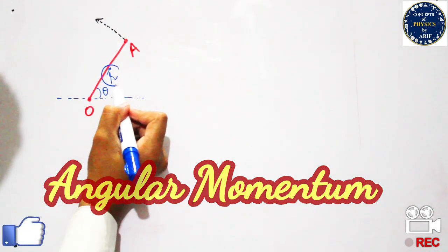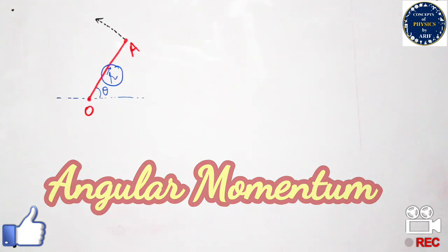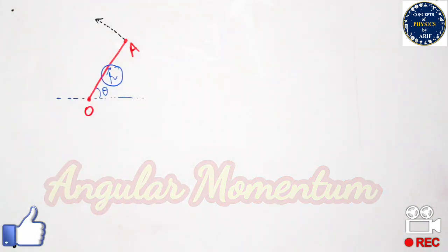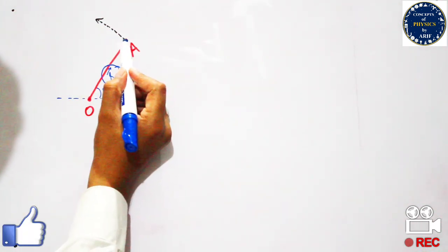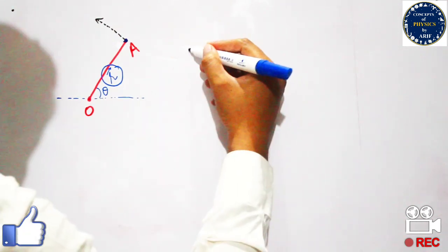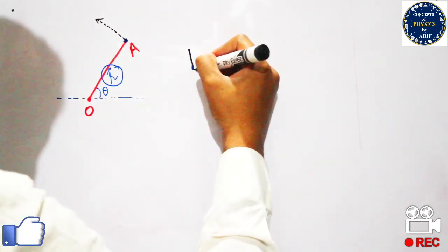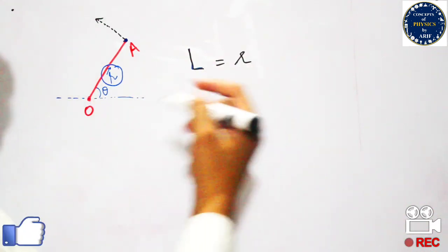First of all, we need to consider the radius of the circle, or the radius at which the particle is moving in angular motion or changing its angular velocity or position. To explain this, we need to understand that angular momentum is known as the cross product of the position vector.